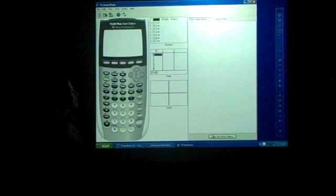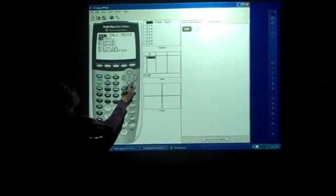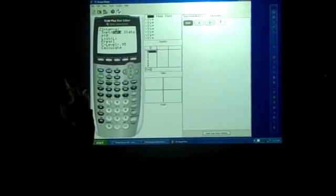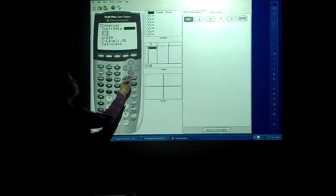If you want to figure this problem out on the calculator, all we have to do is click stats, and then we have to go over to test and down to number 7. And then we have to go over to stats again and click enter, so then it gives us these buttons.